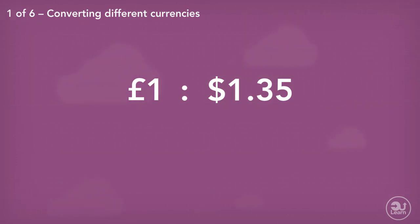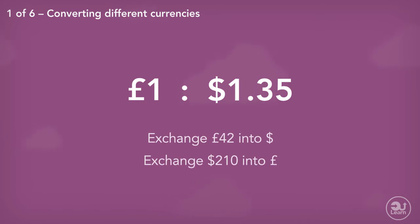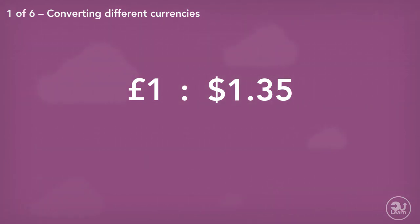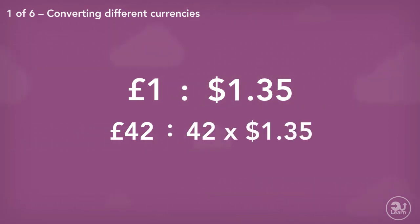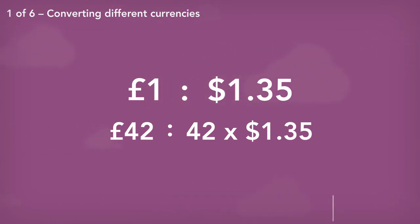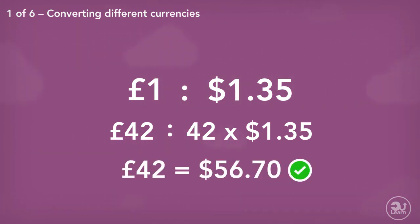So for every £1 you have, it is worth $1.35. How could we use this information to convert £42 into dollars? If each pound is equal to $1.35 and I have £42, then I will have 42 lots of $1.35. Therefore £42 is equal to 42 times $1.35, which gives us the answer of $56.70.